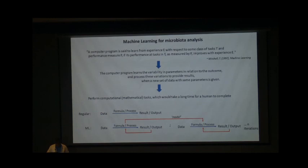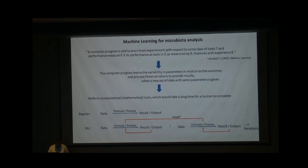Now I come to the last section: machine learning and artificial intelligence in bacterial analysis. As Tom Mitchell, professor from Carnegie Mellon, defined machine learning in 1997: 'A computer program is set to learn from experience E with respect to some class of tasks T and performance measure P, if its performance at tasks in T, as measured by P, improves with experience E.' In simpler terms: a computer program learns the variability in parameters in relation to the outcome and processes these variations to provide results when a new set of data with the same parameters is given.